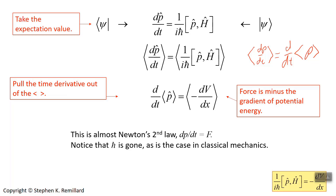The reason it says 'almost' Newton's second law is that classical physics has no concept of an expectation value. The average value over time is not the same as the expectation value — think of a mass on a spring oscillating up and down: the average value of force on that mass is zero because half the time the force goes one way and half the time the other. That's why it's almost Newton's second law — you recover the form of Newton's second law. An important observation: Planck's constant is gone, which is crucial — classical physics does not know Planck's constant.